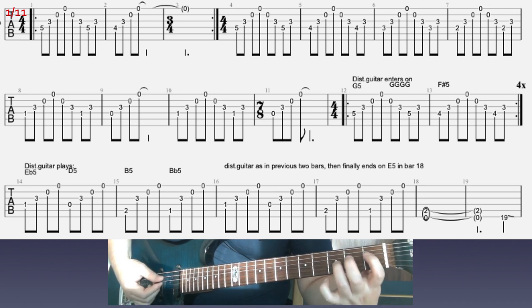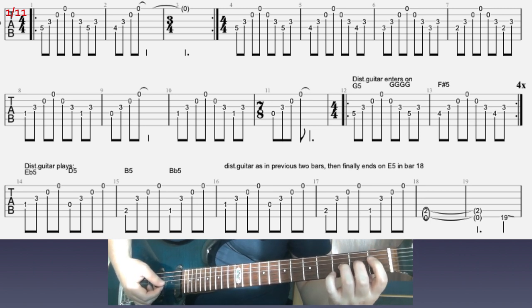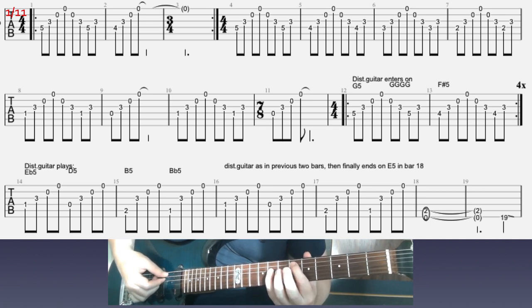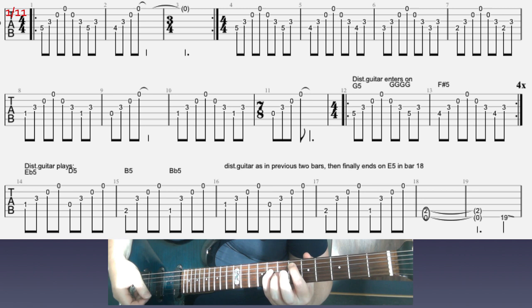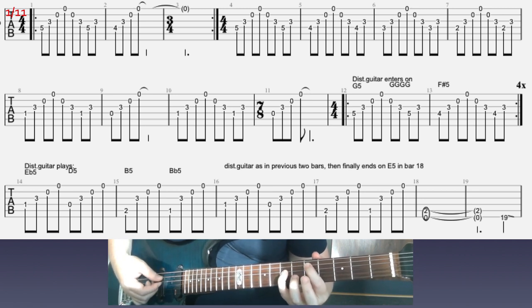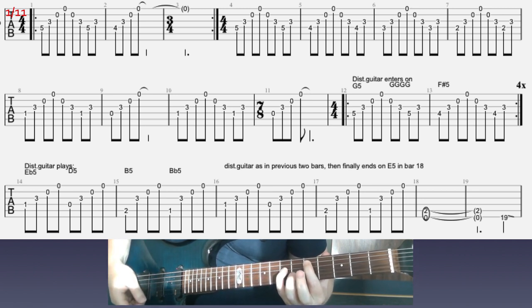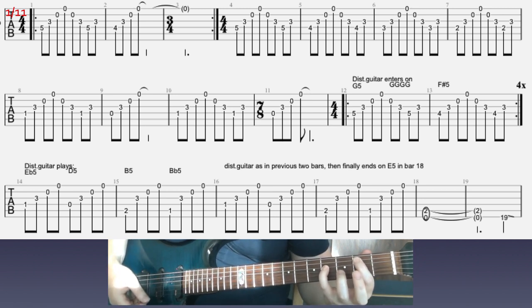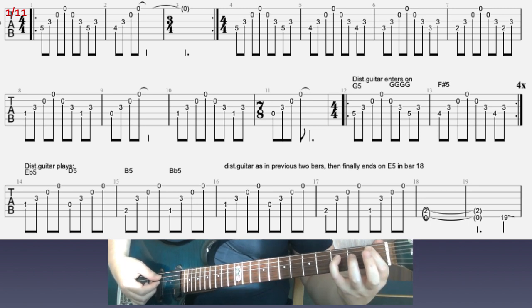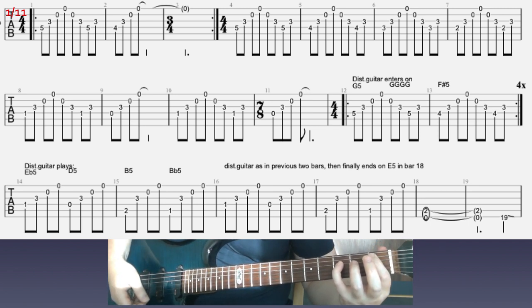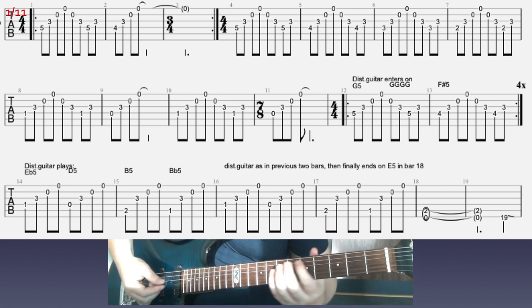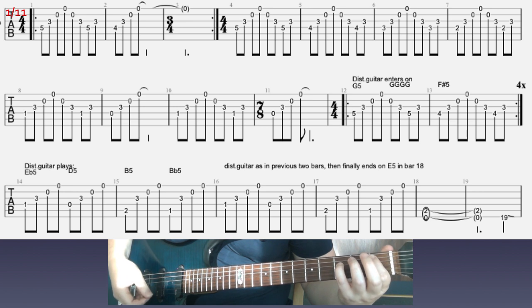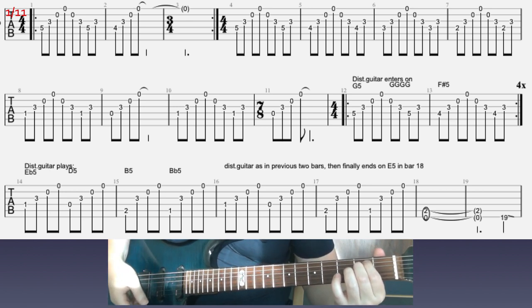Finally, in the third line, the distorted guitar will play those chords that I have written out. That's E-flat, 6th fret on A power chord, then D5, 5th fret on A power chord, then B5, 2nd fret on A, and then B-flat power chord, 1st fret on A. It's gonna be like this one more time, and finally it will end on E.